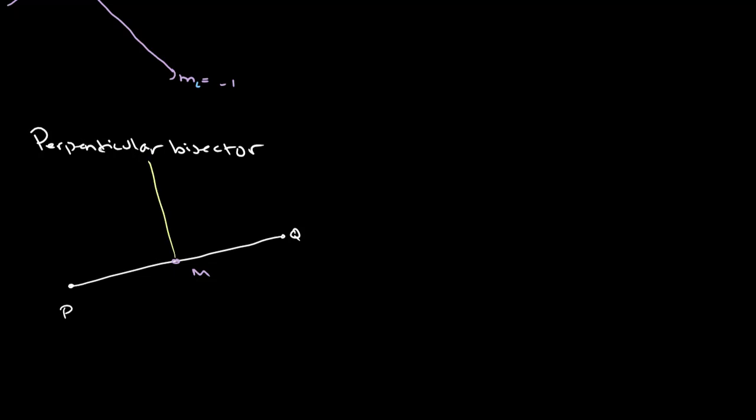So, it'll run through our value of m, and it'll run at a right angle to our line PQ. So, our perpendicular bisector runs through the midpoint, and it is perpendicular to whatever line or to whatever points we have.